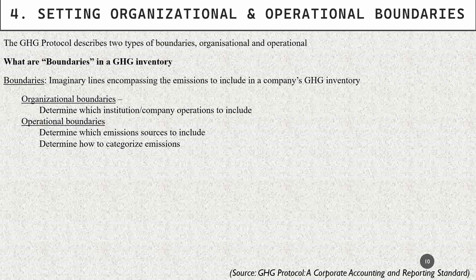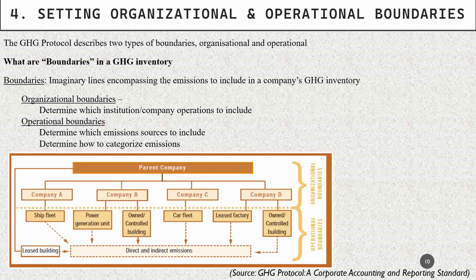In order to calculate the carbon footprint of a hostel, we first have to set certain organizational and operational boundaries, which are based on greenhouse gas protocol standards. We have to create an imaginary boundary — an imaginary line which divides the operational and organizational boundary. The organizational boundary determines which company or institution operations to include, and the operational boundary includes which emission sources to include. For example, a parent company with four sub-companies A, B, C, D — the organizational boundary covers the parent and sub-companies, and each company's tasks are the operational boundary.